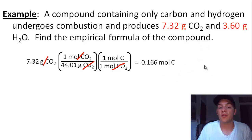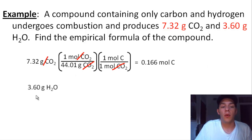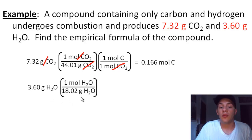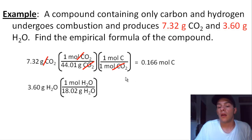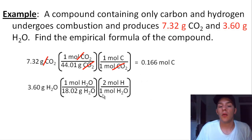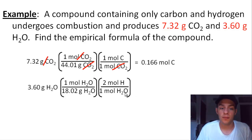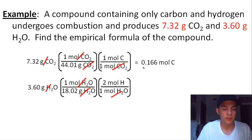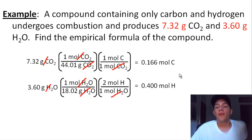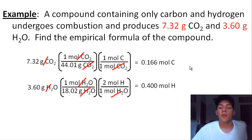We do the same thing with hydrogen, starting with our 3.60 grams of water. Using the molar mass of water, 18.02 grams per mole, we convert from grams of water to moles of water. Then we use the conversion factor from the chemical formula of water — two moles of hydrogen per one mole of water, because there are two hydrogen atoms in every water molecule. Grams of water cancel, moles of water cancel, and this gives us 0.400 moles of hydrogen.